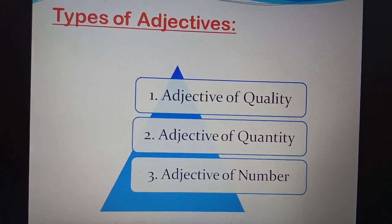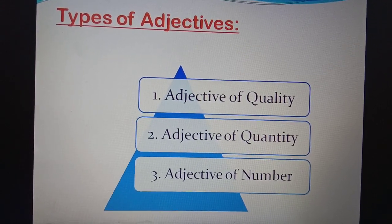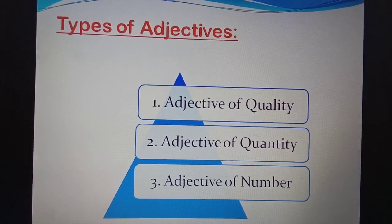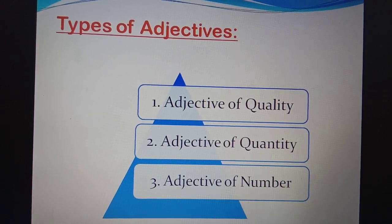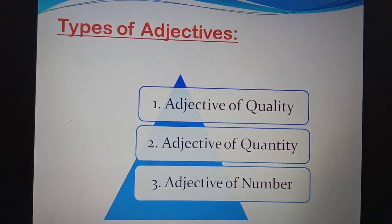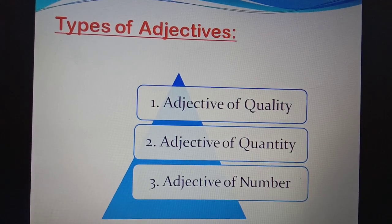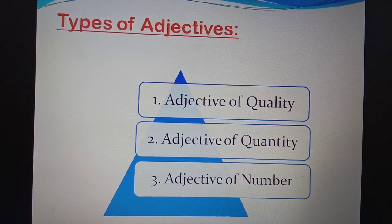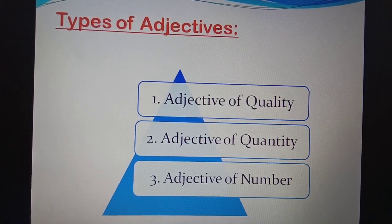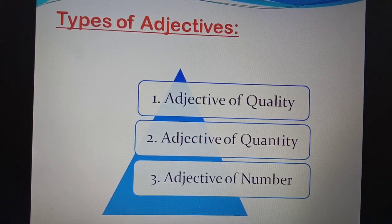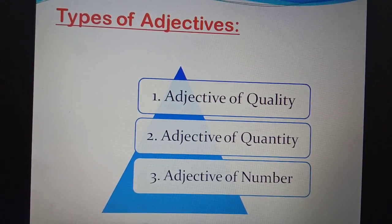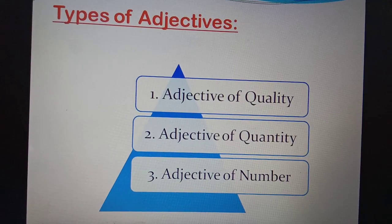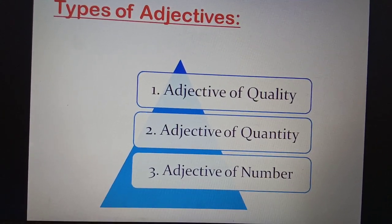The three types are: number one, adjective of quality; number two, adjective of quantity; number three, adjective of number or order. Adjective of quality tells us what kind something is — we will take examples shortly. Adjective of quantity means how much, and covers uncountable nouns like water, food, milk, and bread. Adjective of number is used with countable nouns like dresses, benches, desks, pens, and pencils.